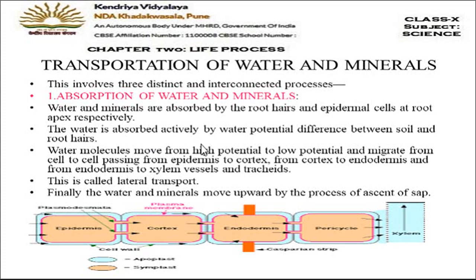Water is absorbed actively by water potential difference. Water is more concentrated outside than inside the plant cells, so water moves from outside to inside. Water molecules move from high potential to low potential, migrating from cell to cell — from epidermis to cortex, from cortex to endodermis, and from endodermis to xylem, as shown by the arrow in the diagram.